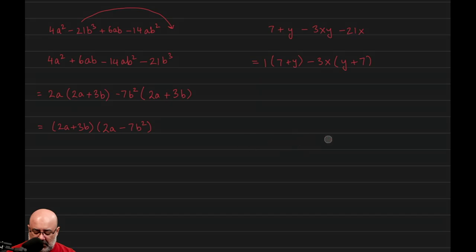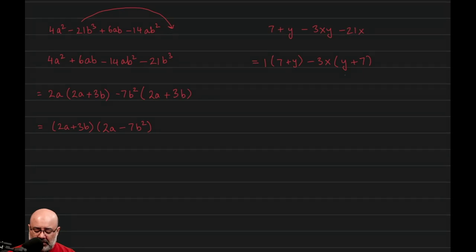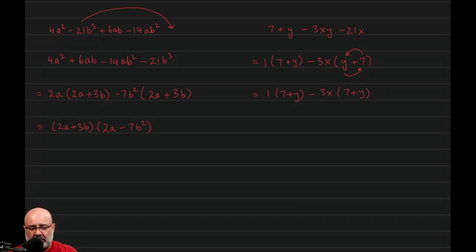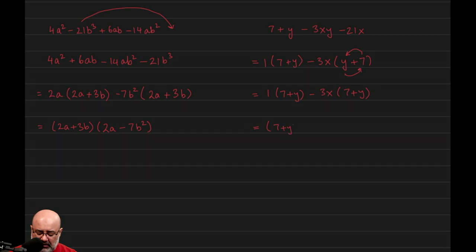Now, rearrangement is a legal thing to do as long as the signs go along with the terms. So instead of writing y plus 7, what if we interchange the locations of these terms? We rewrite this problem as 1 times (7 + y) minus 3x times (7 + y). Since y plus 7 and 7 plus y are the same thing, we can rearrange. Now we see that 7 plus y is the GCF of both terms. We open parentheses — dividing the first term by (7 + y) leaves 1, and dividing the second term leaves negative 3x. So that's our answer.